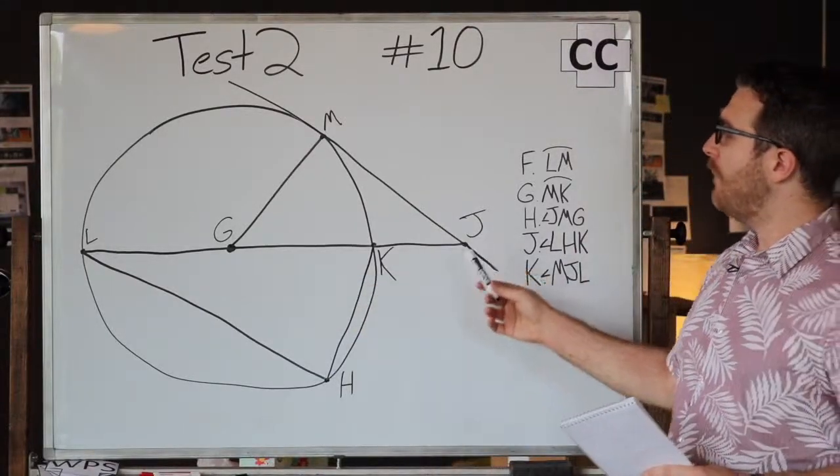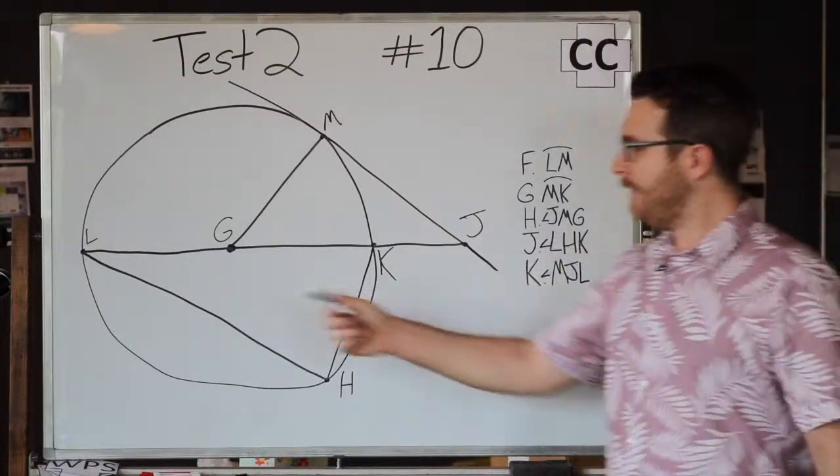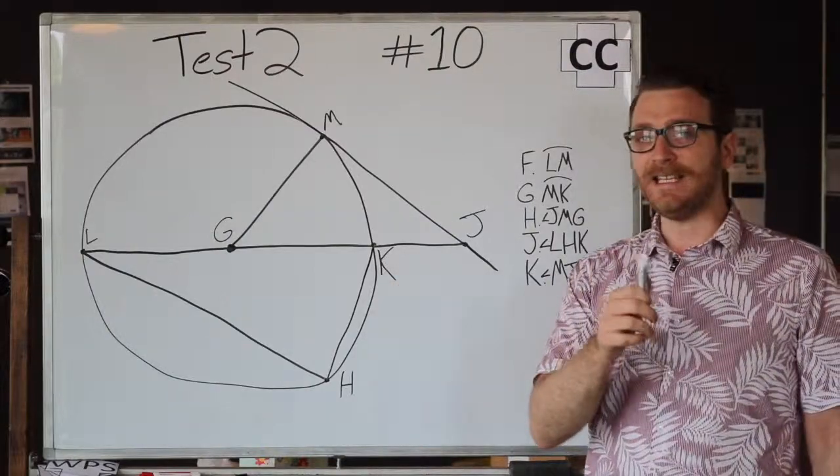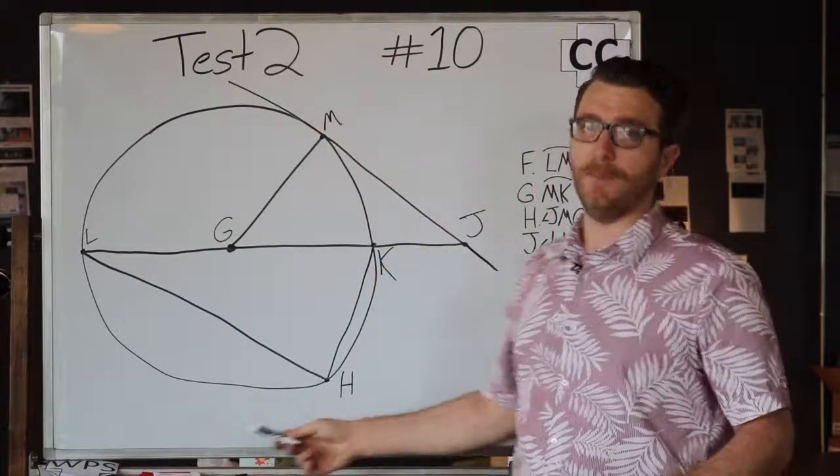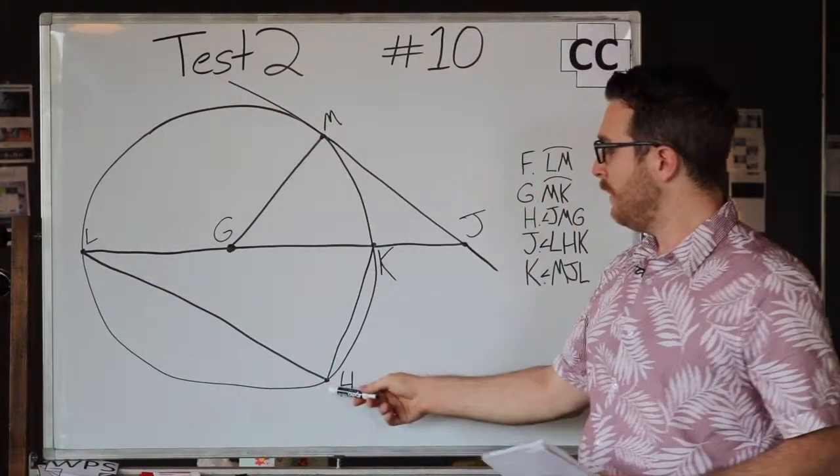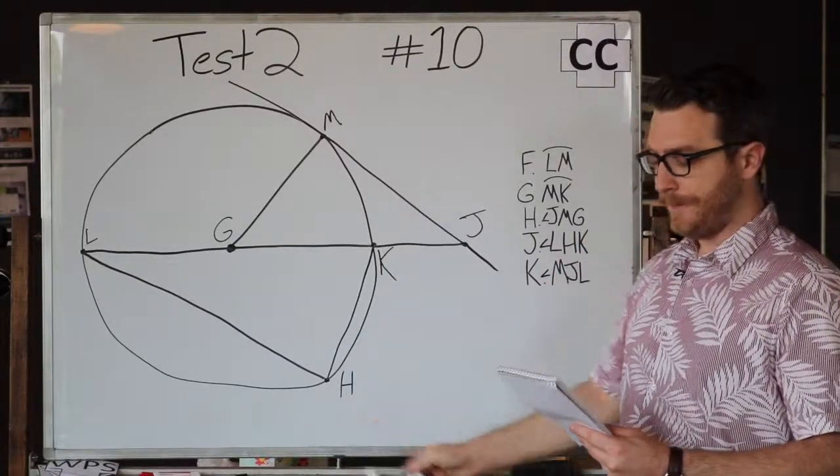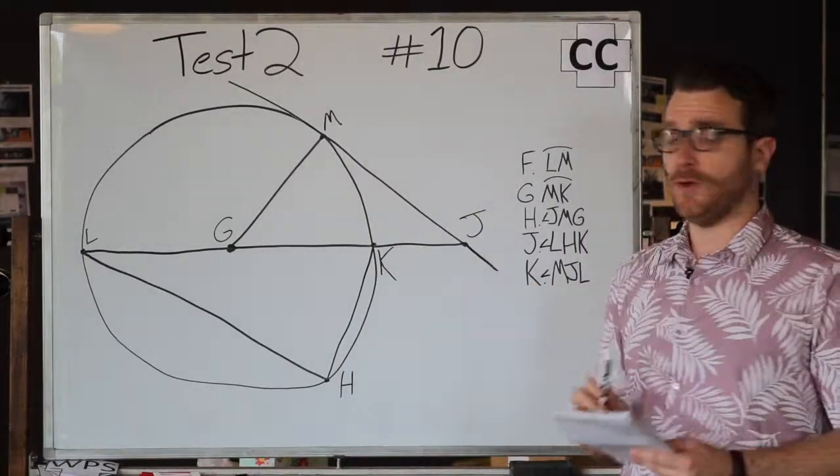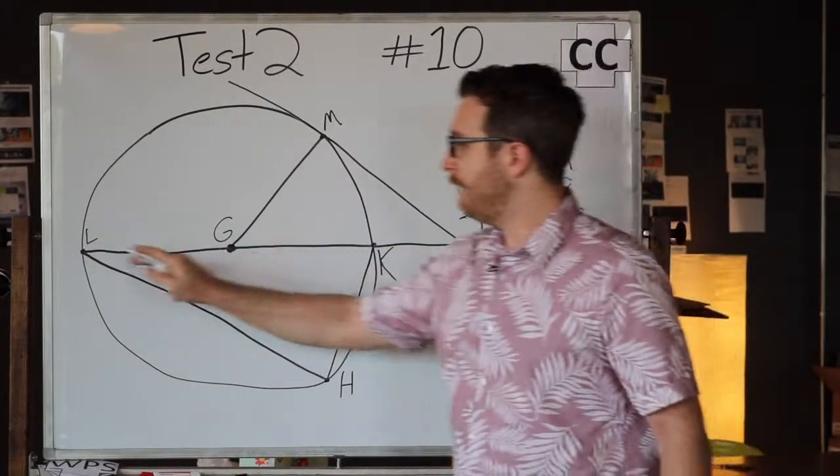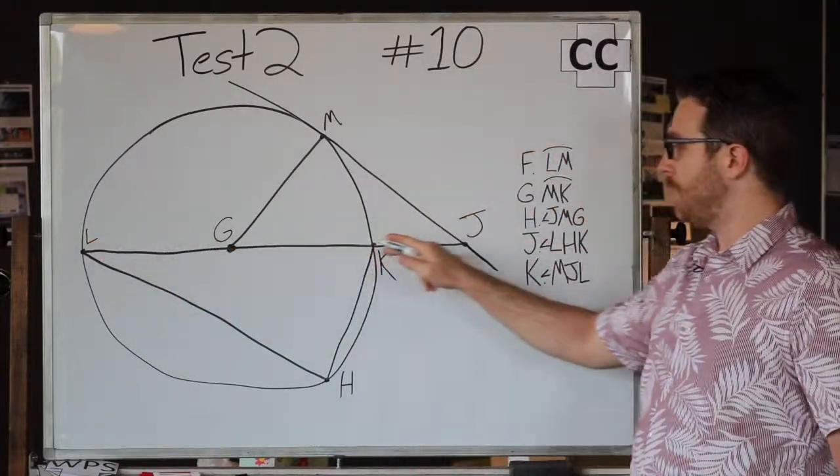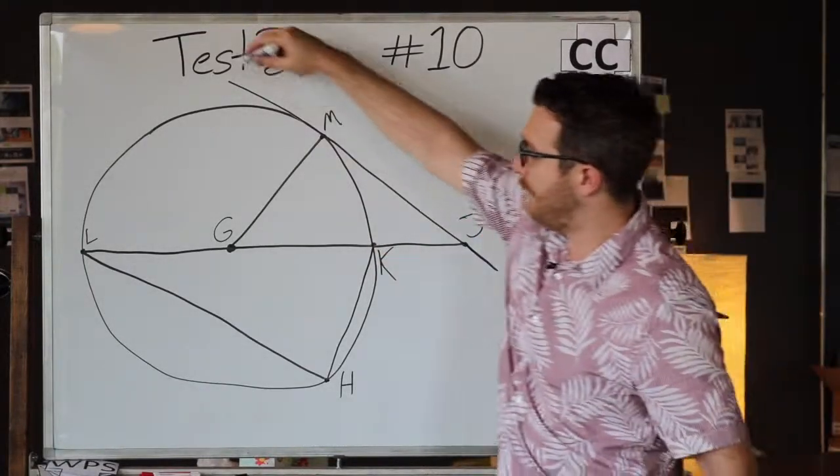Now I have the image here and we have our different points labeled. The problem gives us four basic pieces of information. So LK, that line segment, is the diameter of the entire circle drawn here. H here is on the circle as well—important detail. J way out here is not on the circle, but important to note that J is on the line LK, so if you extended beyond the diameter of the circle, J is extended out there. And finally, JM this line here is...